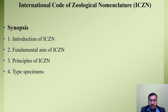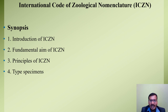Our topic is International Code of Geological Nomenclature. For better understanding, I have divided the entire video lecture into four major parts: Introduction of ICZN, Fundamental Aim of ICZN, Principles of ICZN, and Type Specimens. The first part covers basic information about ICZN, the second covers core principles of ICZN, and the fourth part discusses the concept of type specimens.